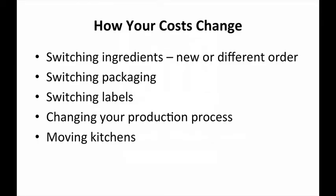You could switch ingredients, find a different vendor, switch packaging, or switch labels. You could also change your production process so you get more yield for the same amount of labor, which changes your cost of goods. And you could move kitchens — when we switched co-packers, our cost went down and we kept our margins the same, so we made a little bit more money, which is always good.